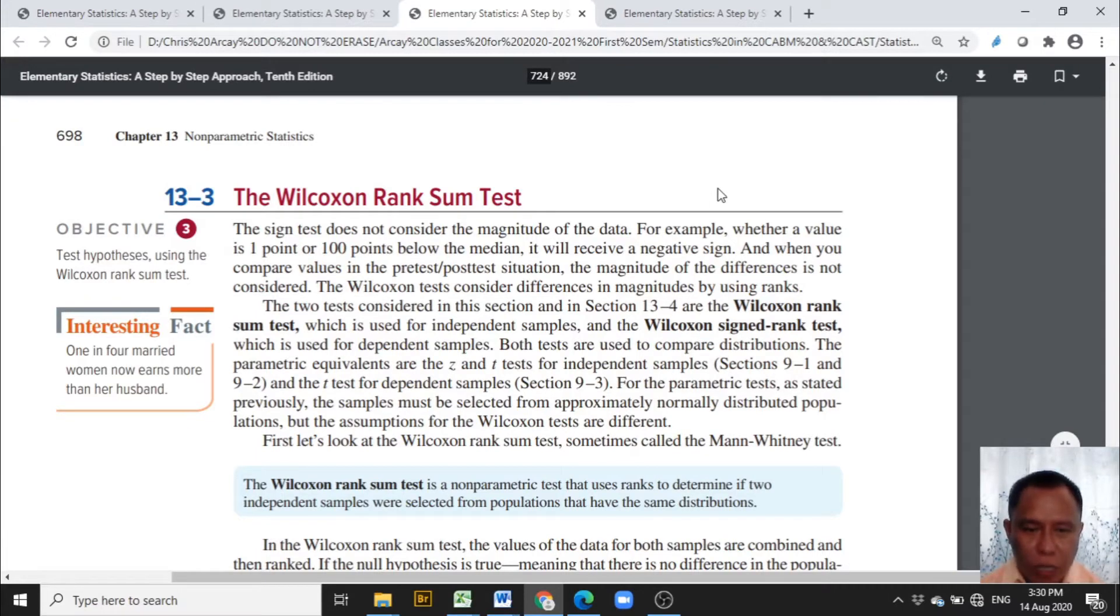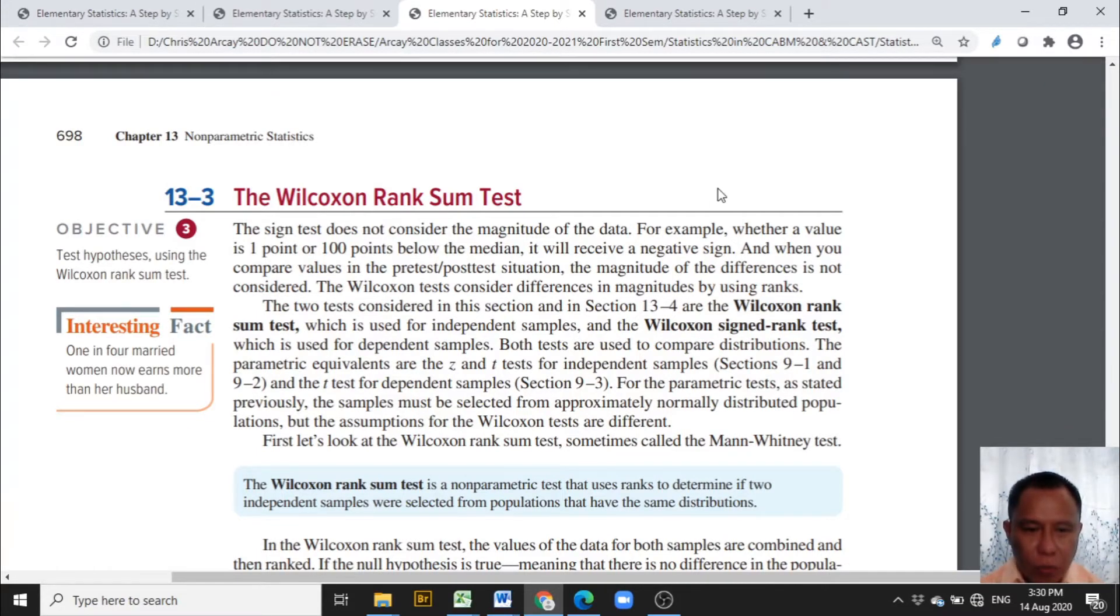This video will present the computation of the Wilcoxon Rank Sum test. The Wilcoxon Rank Sum test is used to compare if two independent samples were selected from populations that have the same distributions. The Wilcoxon Rank Sum test is sometimes called the Mann-Whitney test. The Z test and the T tests are the counterpart of the Wilcoxon Rank Sum test for independent samples in the parametric tests.